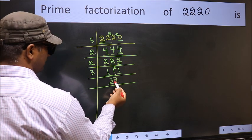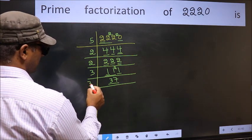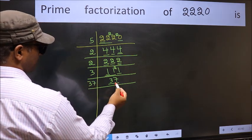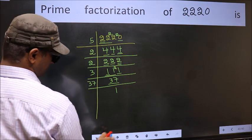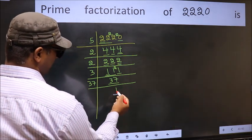Now here we have 37. 37 is a prime number. So 37 times 1 is 37. So we got 1 here.